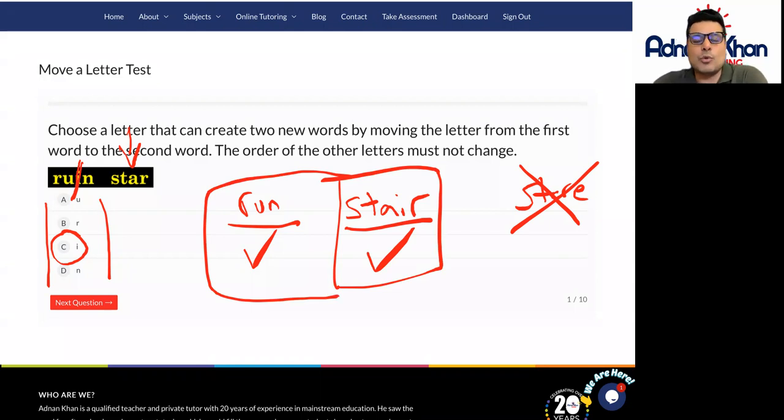In this case we've got two brand new words which are run and stair. So that's what you have to do with the rest of the questions with one letter from the left to the right to make two brand new words. Good luck with these and we'll follow these up in our next class. Thank you.